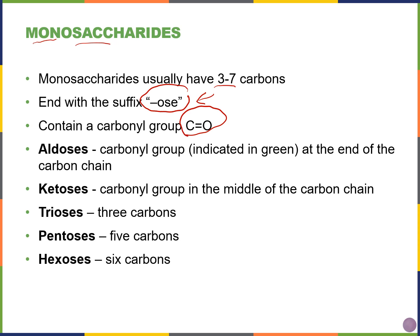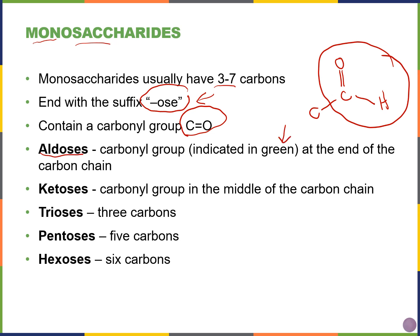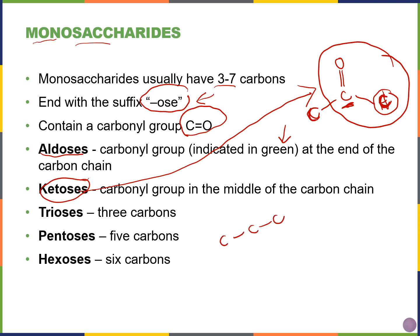In monosaccharides you'll see carbonyl groups and polar groups. If the central carbon of the carbonyl group is bound to a carbon on one side and a hydrogen on the other, these are called aldoses. In contrast, if both sides of the central carbon have a carbon attached — two carbons on either side — then these are called ketoses.